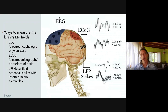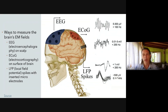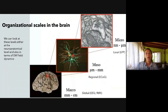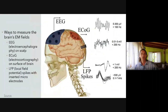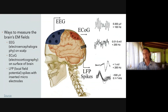We talked last time about how this is measured in the lab: EEG on the scalp, ECoG on the surface of the brain, and then electrodes used to measure LFP spikes inside the brain. This relates to the different scales in the brain — micro, meso, and macro — which is a reasonable way to think about these effects. This can relate roughly to EEG, ECoG, and LFP, and you can actually measure a single neuron nowadays using various tools.